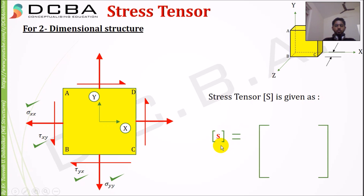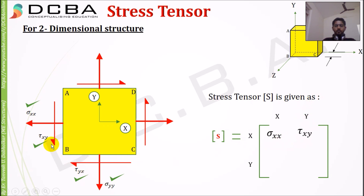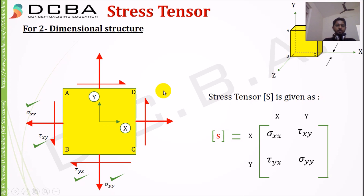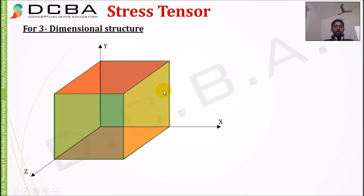So the stress tensor for a two-dimensional structure is given as a 2×2 matrix S: the (x-row, x-column) entry is sigma_xx, the (x-row, y-column) entry is tau_xy, the (y-row, x-column) entry is tau_yx, and the (y-row, y-column) entry is sigma_yy.